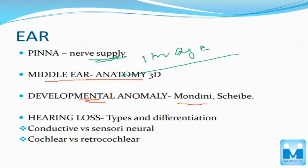The third topic is developmental anomalies, just like Mondini's dysplasia. We just have to know what that anomaly is — that's it. You don't have to go into detail; just know what that anomaly is.